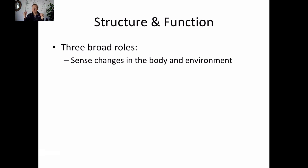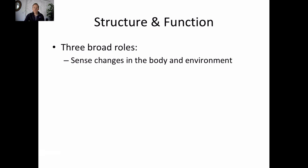First, we're going to think about incoming sensory information — afferent information — that our nervous system is collecting about our body and environment. This could be all of our touch-type receptors, vision, hearing, proprioceptors in our joints, sensory information from our organs systemically. All that afferent information leaves our tissues and travels toward our central nervous system.